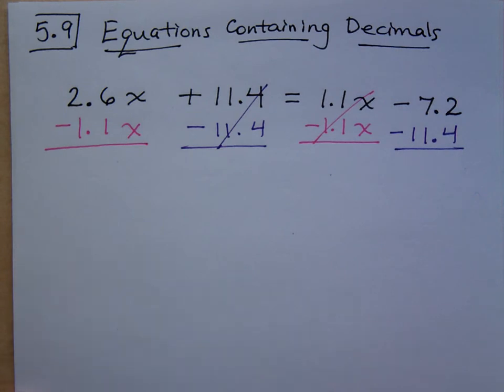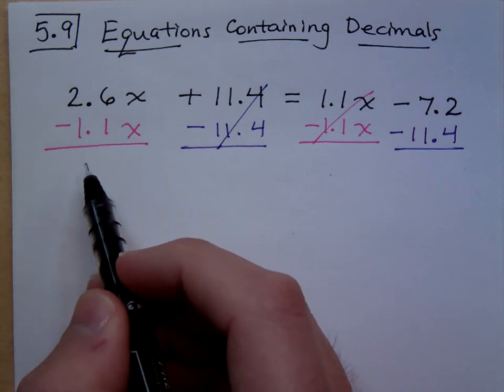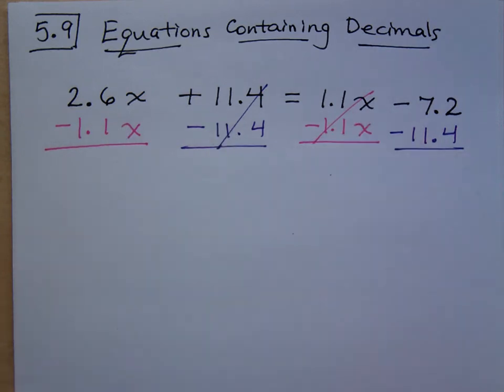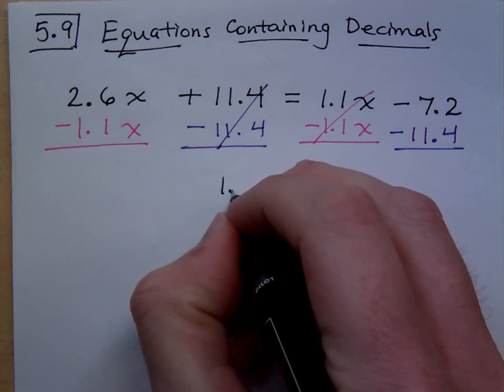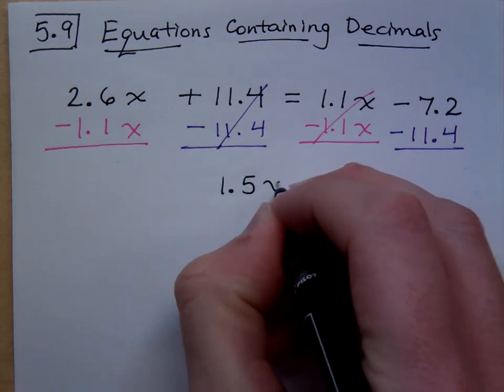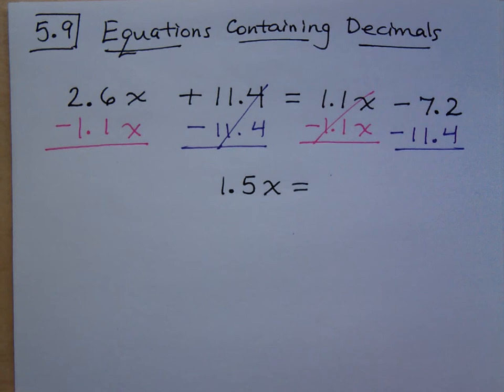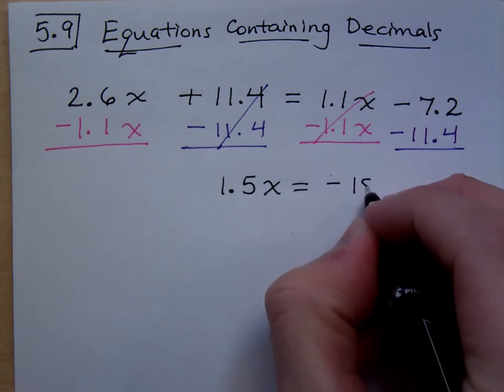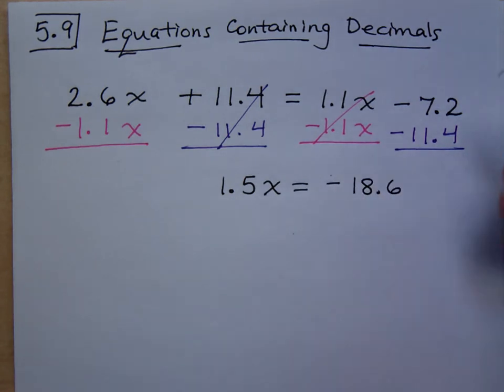You have the x's canceling on the right as you move them to the left and the constant cancels there on the left. So when I combine 2.6x minus 1.1x, that's 1.5x. Now you could use a calculator, maybe this is the kind of question that I'll put on the calculator portion of the test. On the right side, negative 18.6. Both of these guys are negative so you just need to add them.